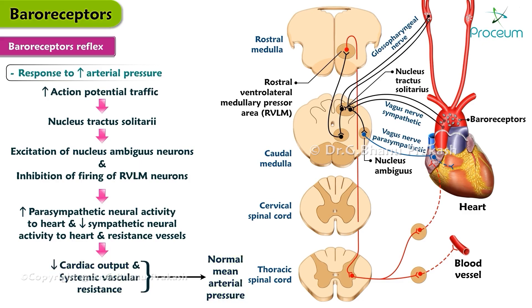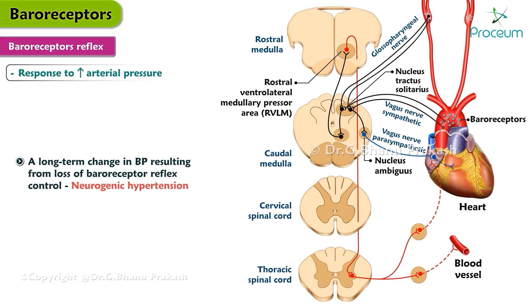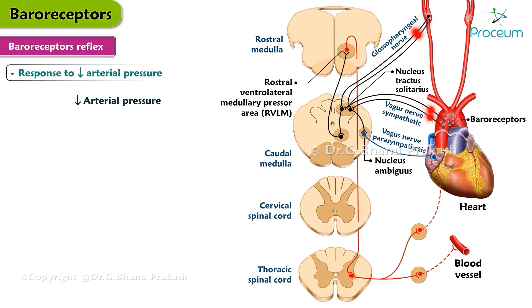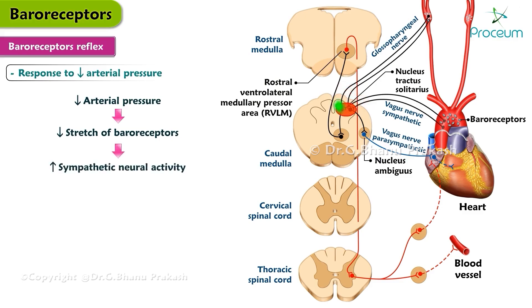This causes decreased cardiac output and systemic vascular resistance. Since the mean arterial pressure is the product of systemic vascular resistance and cardiac output, the mean arterial pressure is returned toward the normal level, completing a negative feedback loop by which increases in mean arterial pressure can be attenuated. A long-term change in blood pressure resulting from loss of baroreceptor reflex control is called neurogenic hypertension.